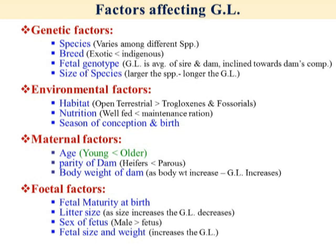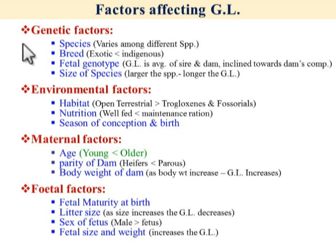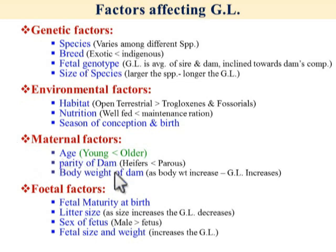This slide summarizes the different factors influencing gestation length, broadly classified into four categories: genetic factors, environmental factors, maternal factors, and fetal factors. Genetic factors include species, breed, fetal genotype, and size of species. Environmental factors include habitat, nutrition, and season of conception and birth. Maternal factors include age of the dam, parity of the dam, and body weight. Fetal factors include fetal maturity at birth, litter size, sex of the fetus, and fetal size and weight.